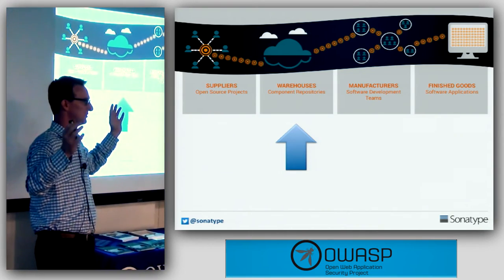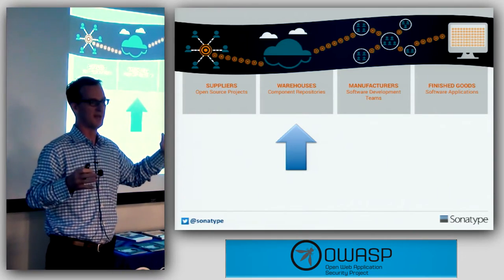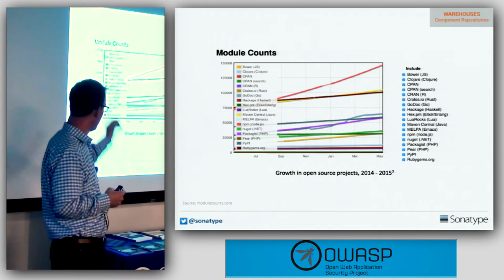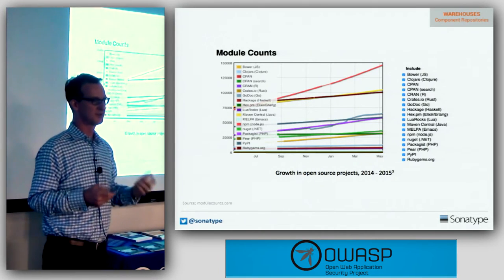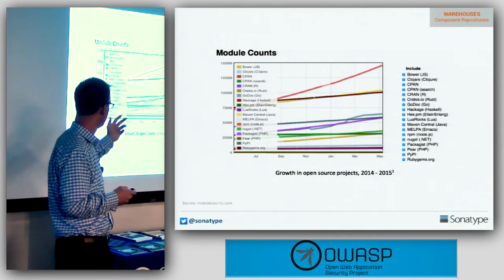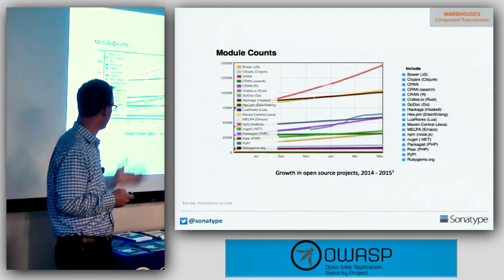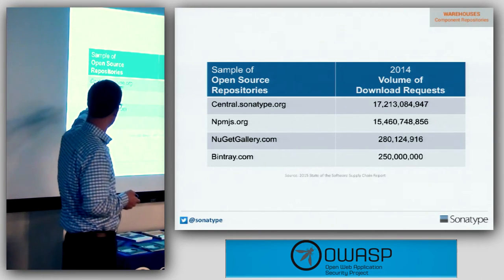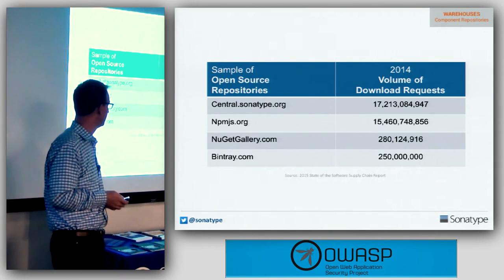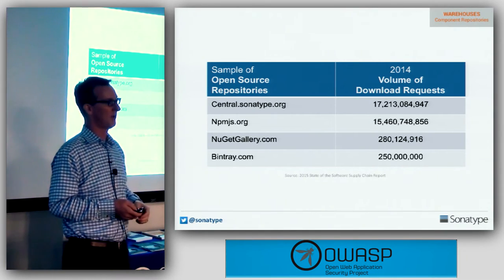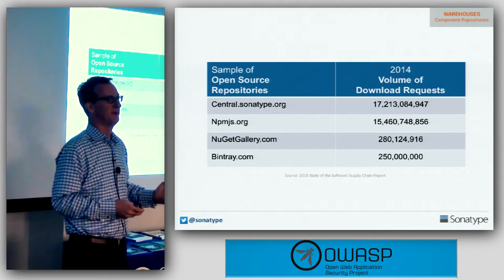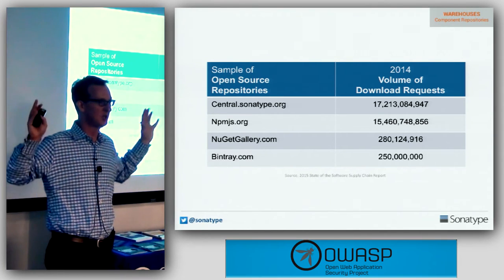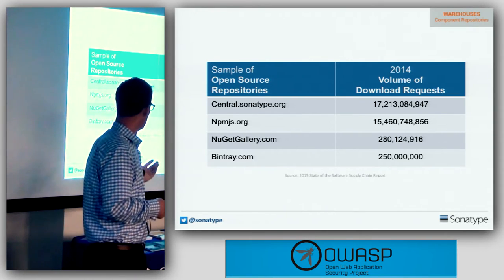Across Java, Bower, CPAN, NPM, and Python components, the number of components is in the hundreds of thousands or tens of thousands across all these repositories. Modulecounts.com tracks the counts. We handled 17 billion download requests last year; NPM JavaScript-related components had 15 billion downloads last year. Even newer .NET components from the NuGet Gallery — only active for about two years — are doing 280 million downloads annually. There is a huge volume of consumption across the industry.